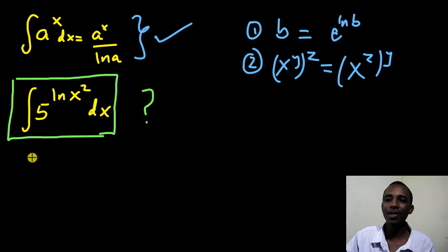I'm going to express this integral in another way. I'll write this 5 as the exponent of the natural log of 5. So that's 5. And then to power, the natural log of x squared, dx.